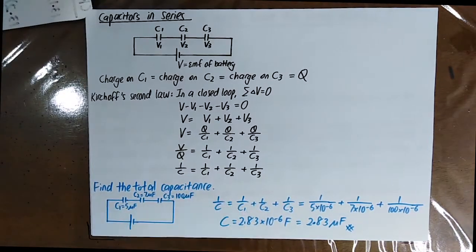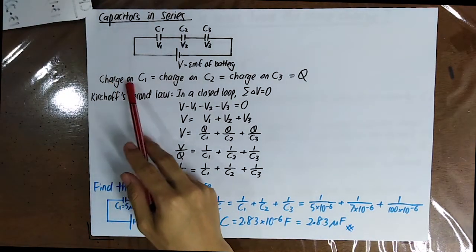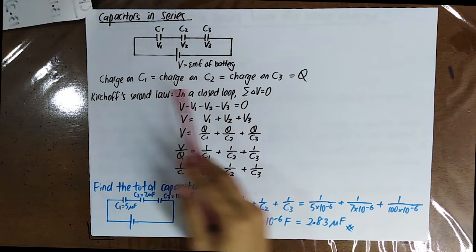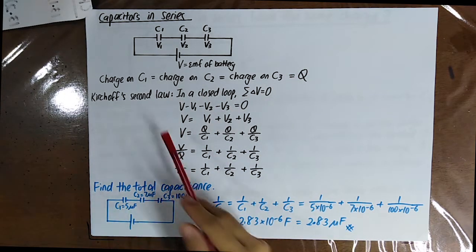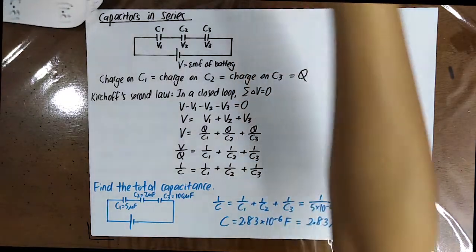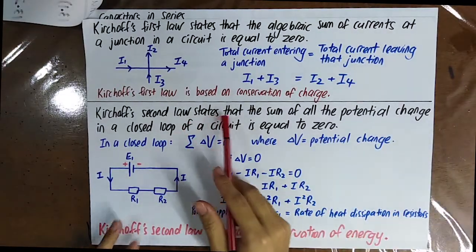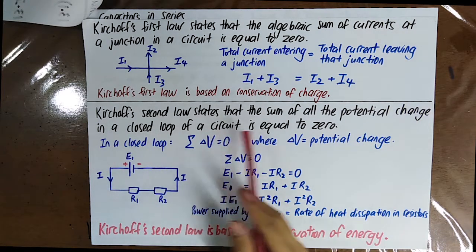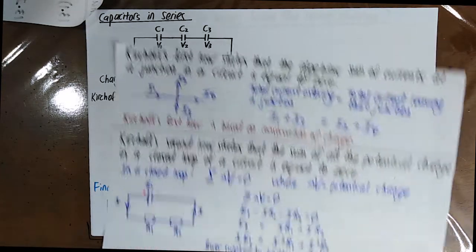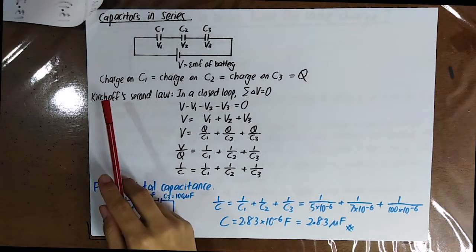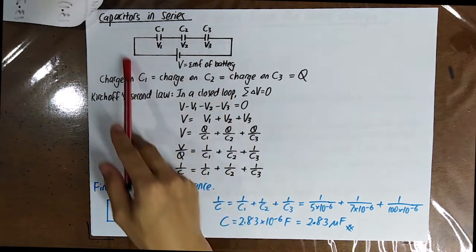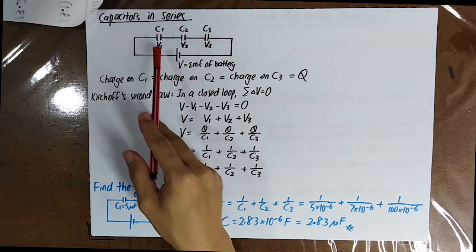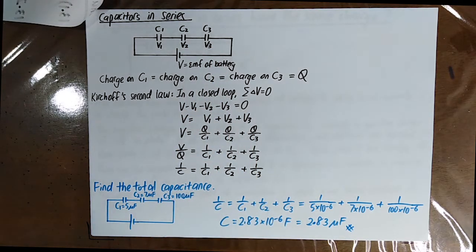The charge on C1 is equal to the charge on C2, which is equal to the charge on C3, and we denote the charge as Q. Remember Kirchhoff's second law, which states that the sum of all the potential changes inside a closed loop of a circuit is equal to zero. So inside this closed loop, V minus V1 minus V2 minus V3 is equal to zero, where V1, V2, and V3 are the potential differences across capacitors C1, C2, and C3 respectively.